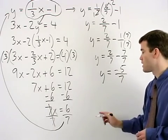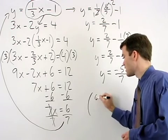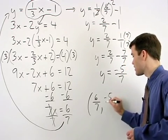So the solution to this system is 6 sevenths negative 5 sevenths.